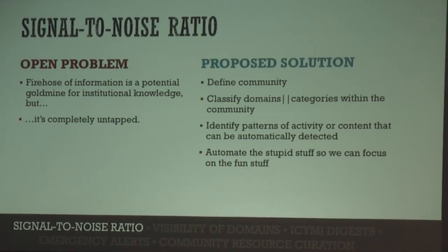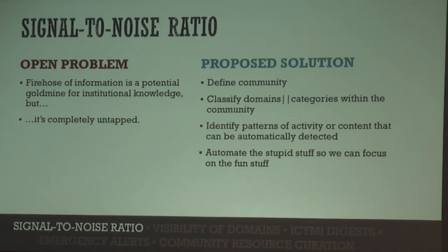The firehose of information that is InfoSec Twitter is a potential goldmine for students and practitioners alike, but there's no practical way to navigate that volume of information manually. Cat memes and shitposts are annoying when you're trying to look at technical info, and ThreadZillas are almost impossible to navigate unless you're actively monitoring their development in real time. We've done the groundwork for defining the community and classifying most of the domains, and I have hundreds of notes on patterns that could be automatically detected by running analytics on that data set. We should automate all the stupid stuff so we can focus on the fun stuff.